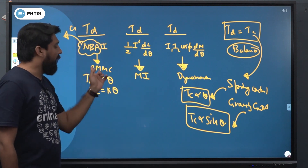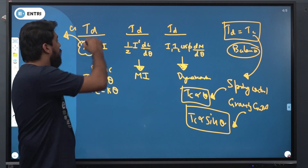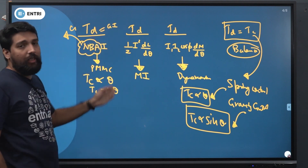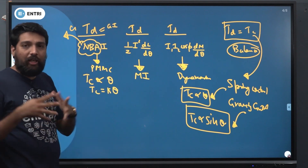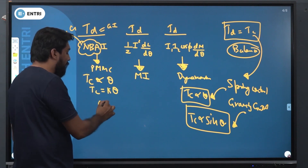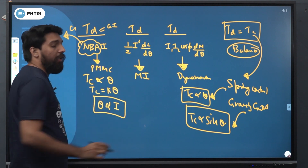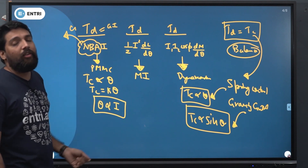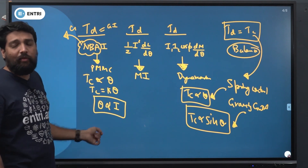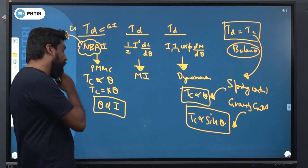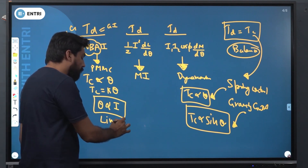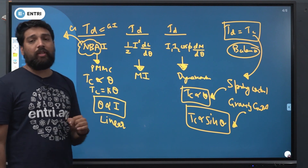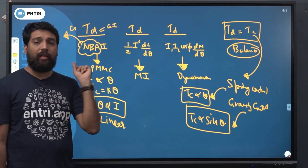The principle used in PMMC is defined by the deflection principle. The value of deflecting torque is G. In a steady state condition, G equals K * theta. At that point, Td is proportional to current I. The deflection will be linear, so this behavior will be a linear behavior, making it an accurate instrument.